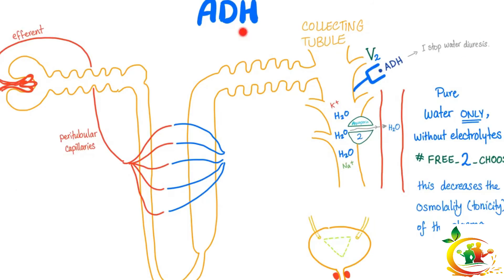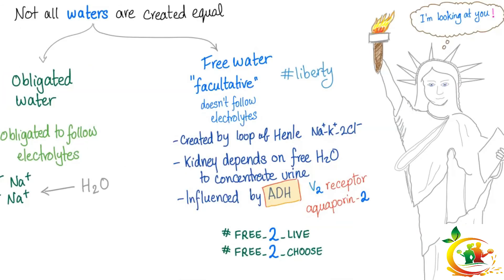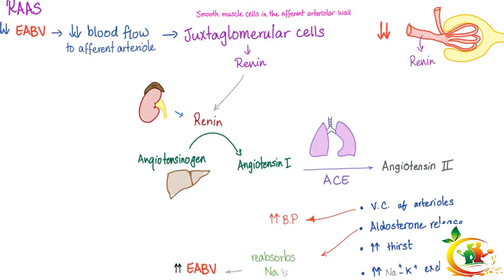ADH acts on tubules using V2 receptors, opening aquaporin-2 protein channels for water. Water flows from the tubule to the peritubular capillaries — this is reabsorption of pure water without electrolytes, called free water or facultative water — free to choose, regulated by the V2 receptor. There are two types of water: obligated and free.